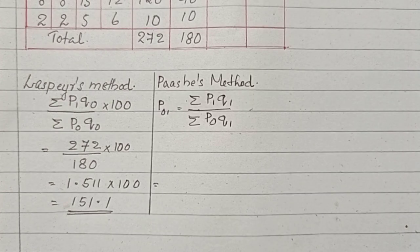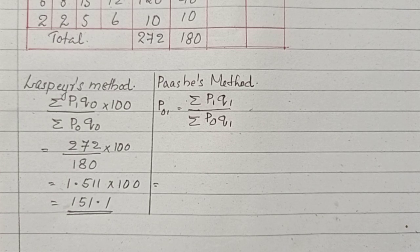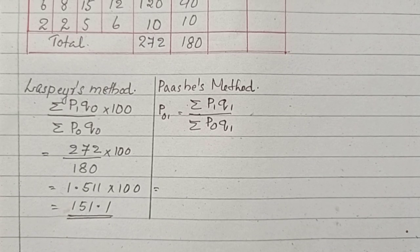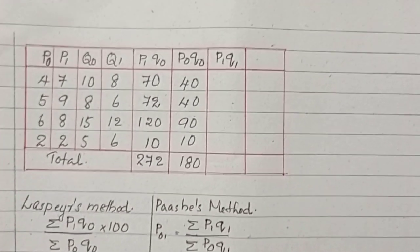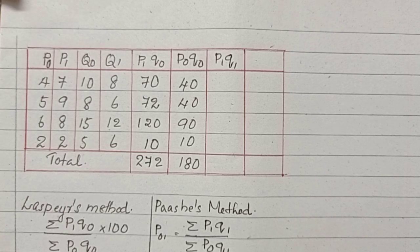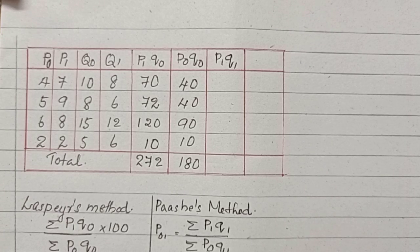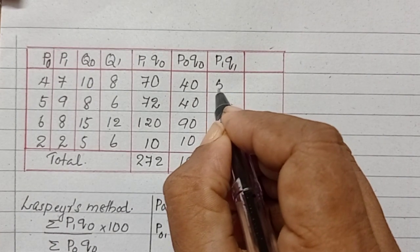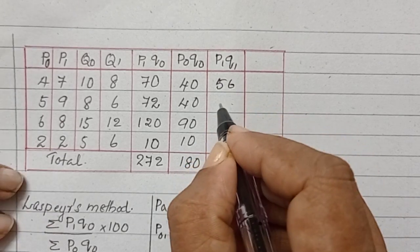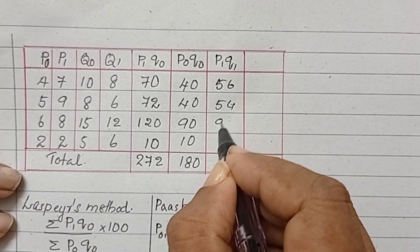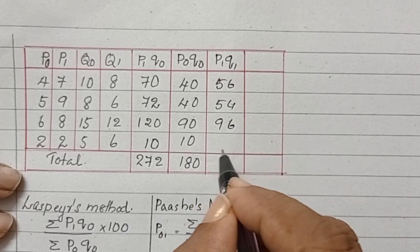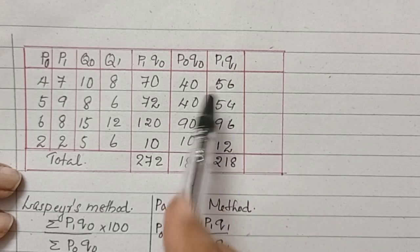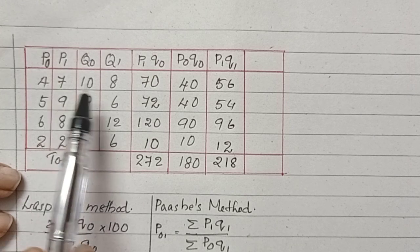In Paasche's Method, the formula is sigma P1 Q1 divided by sum of P0 Q1 into 100. First we are multiplying P1 into Q1. P1 is 7 and Q1 is 8, 7 into 8 is 56, then 54, 96. After that, the sum is 218.